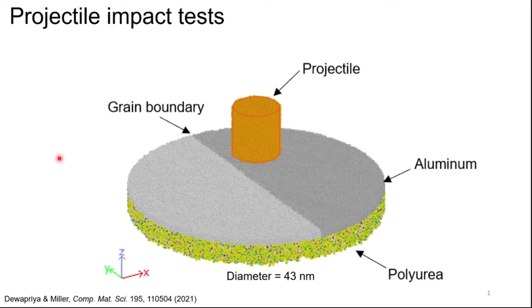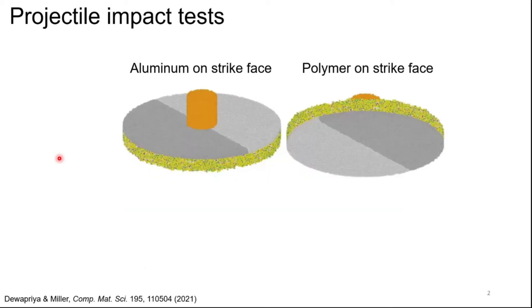This is the MD model we used to simulate the projectile impact test. This movie shows two impact simulations. In this sample, we keep aluminum on the strike phase. In this one, the polymer is on the strike phase. The initial velocity of the projectile is 1.5 kilometers per second.